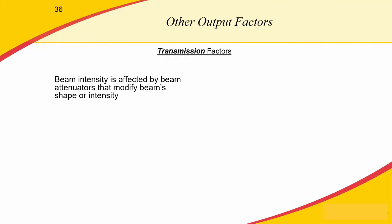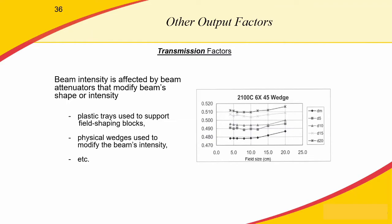There are also transmission output factors. Beam intensity is affected by any attenuator that modifies the beam's shape or intensity — anything physically attached to the machine that interacts with the beam. This includes plastic trays supporting field-shaping blocks and physical wedges. These modify beam intensity and must be accounted for as transmission factors as a function of field size. These measurements are plotted and included in the output information binders or PDF files used in your dosimetry department.